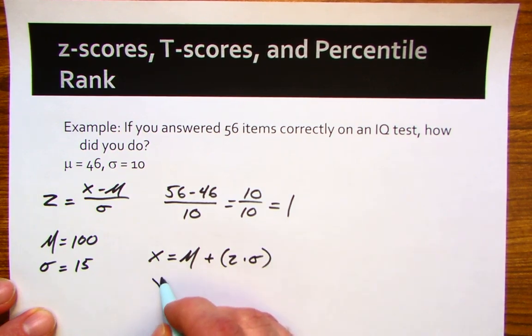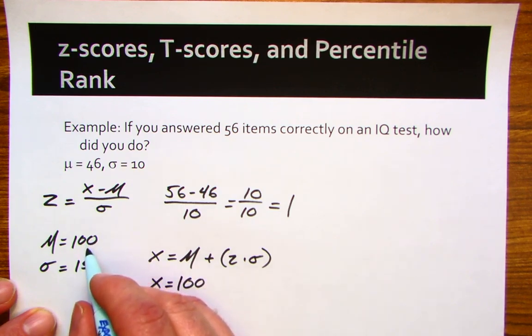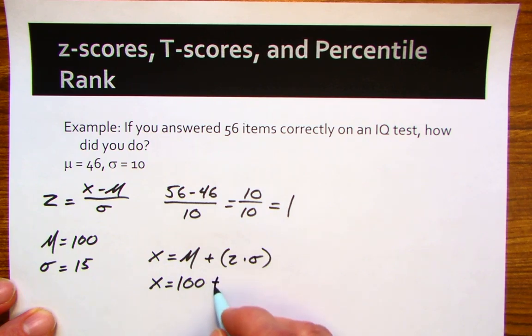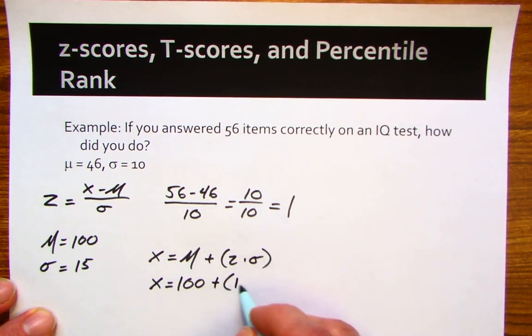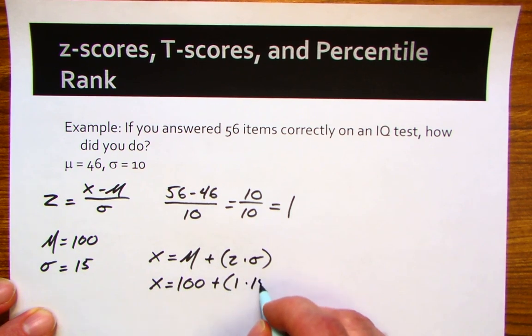In our case, to figure out what your score would be, the mean is 100 on this transformed distribution. Our z was 1 times the standard deviation of the transformed distribution is 15.